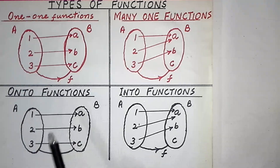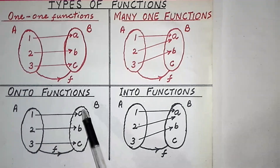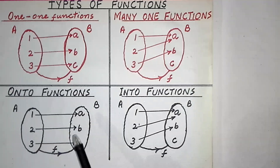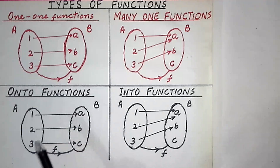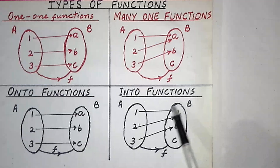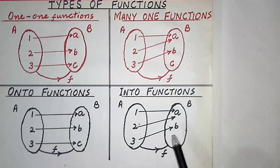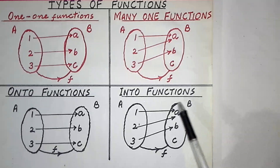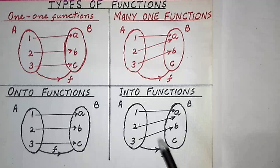If the range of a function is equal to its co-domain, then the function is called an onto function or surjective function. The inner elements make the range while the whole set makes the co-domain, and here range equals co-domain, so this is onto. If range is not equal to co-domain — that is, range is smaller than co-domain — then the function is called an into function.